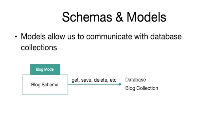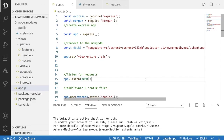The next thing we do is create a model based on that schema. The model is the thing that actually allows us to communicate with a particular database collection. For example, if we create a block model based on a block schema, the block model will have both static and instance methods which we can use to save, update, delete, or read data from the blocks collection. That's the theory behind it — don't worry if you don't fully understand it yet, we are going to have plenty of practice. Let's start by using Mongoose to connect to the database.